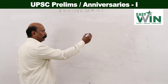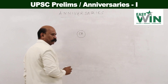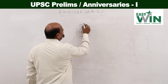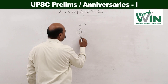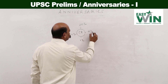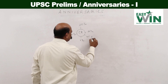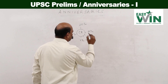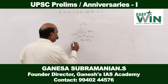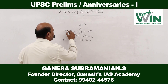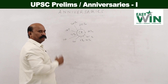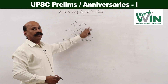Basically, when it comes to current affairs, there are certain things relating to anniversaries — such as what completes 5 years, 10 years, 25 years, 50 years, 75 years, 100 years likewise. At times, UPSC can also focus on 125 years, 150 years, 175 years, and 200 years anniversary. These are all potential areas of questions.